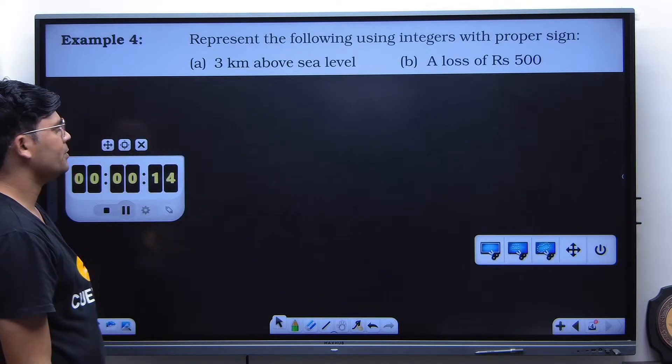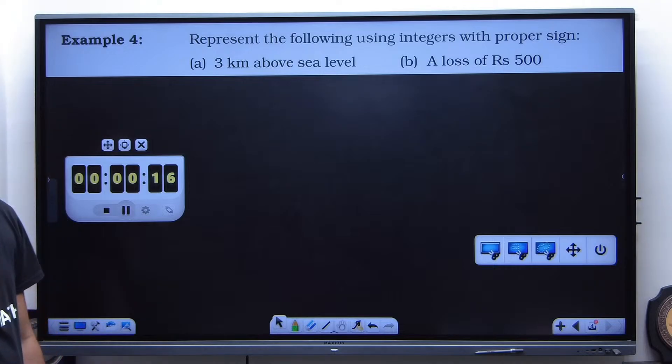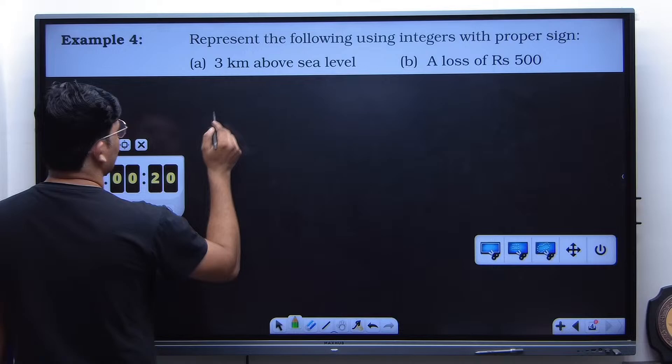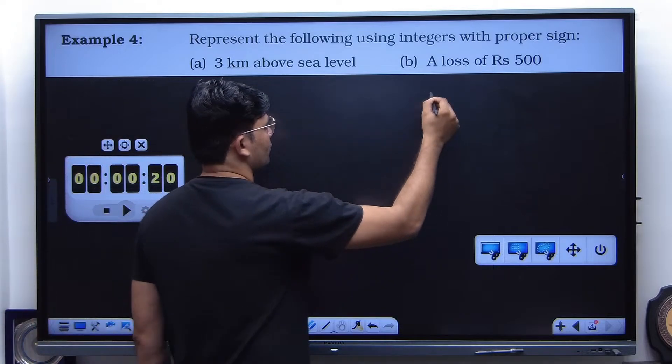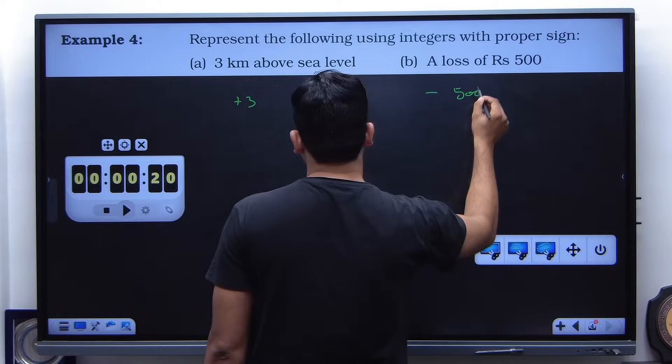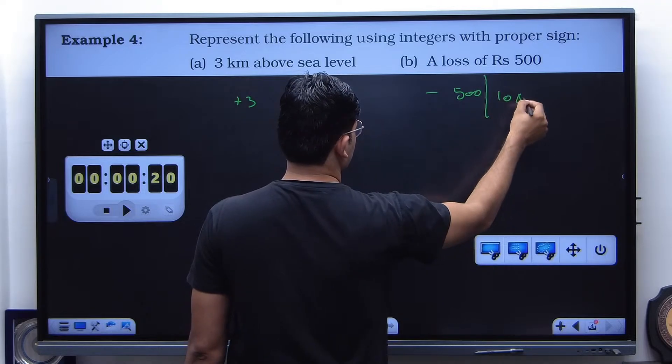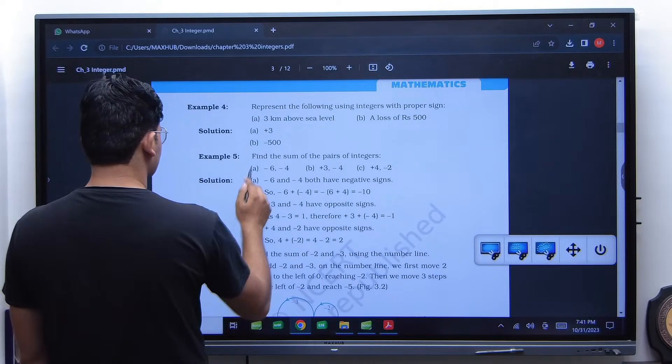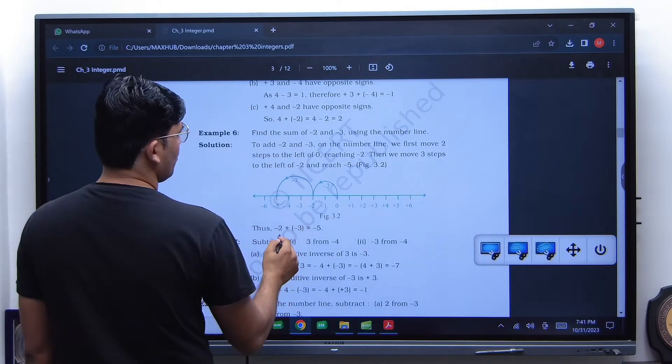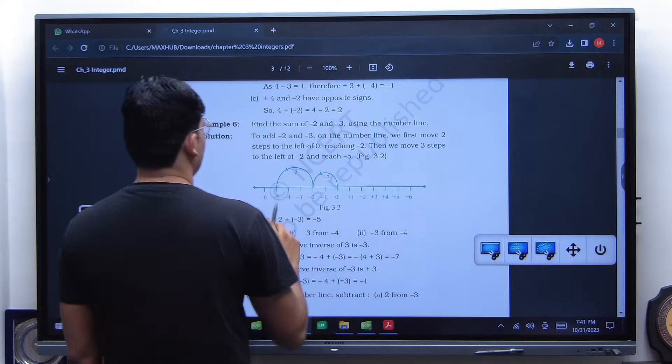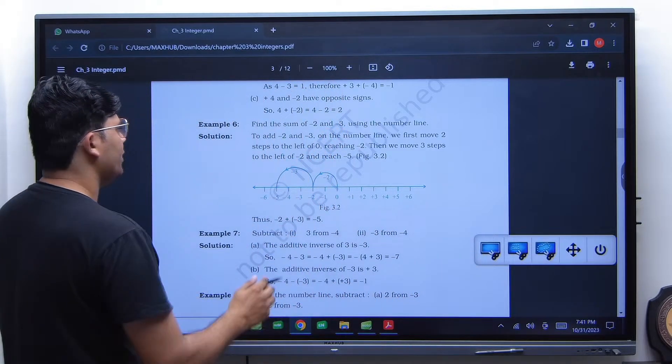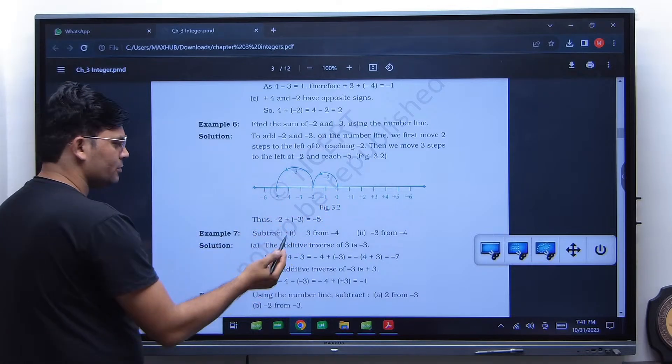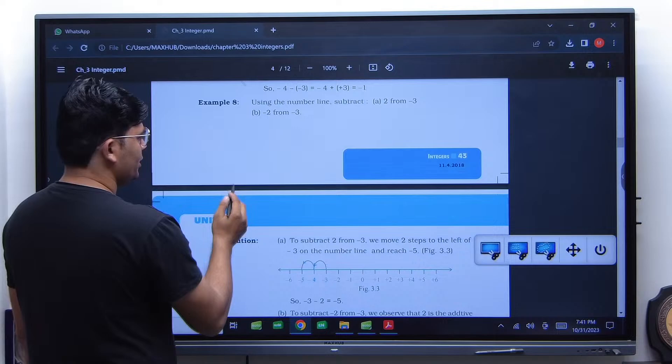Okay, this question is not of your quality. So let's see. Represent the following integers with the proper sign. Plus 3, very good. Minus 500, wonderful.